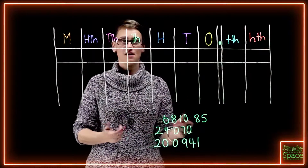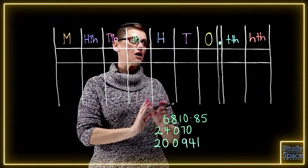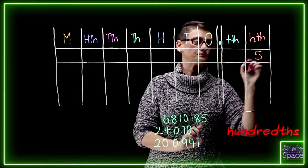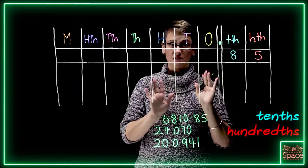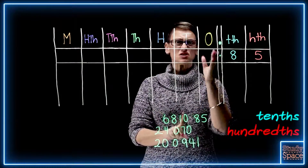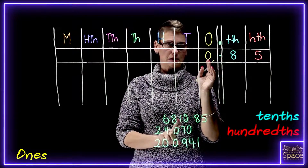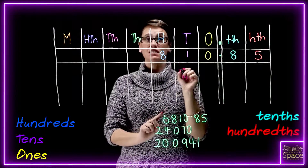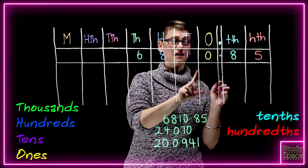Let's have a look at these numbers now. Our first number is 6810.85. Remember, working from right to left. We need to put our five in, which is worth hundredths — five hundredths. Then we put our eight in, which is eight tenths. Our decimal place, which doesn't move. Now we've got zero in the ones column — we don't skip it, we need to put it there because it holds a place value. Then the one in the tens column, the eight worth eight hundred, and the six worth six thousand. Our number is 6810.85.